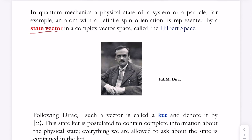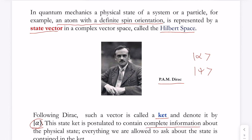We define the state of a particle by the so-called state vector in a complex vector space, also called the Hilbert space. It is postulated that all the complete information of the system — for example, an atom with a definite spin polarization — is represented by the state vector. Following Dirac, the British physicist, this state vector is called a ket vector, denoted by |α⟩ or |ψ⟩. This ket is postulated to contain the complete information about the physical state.